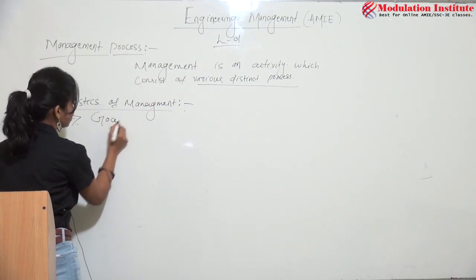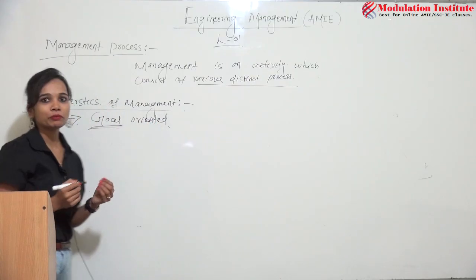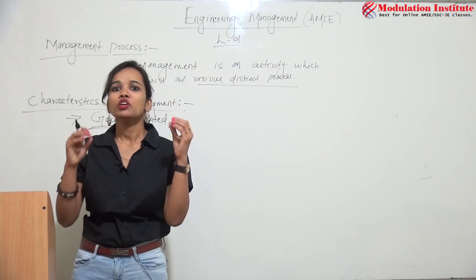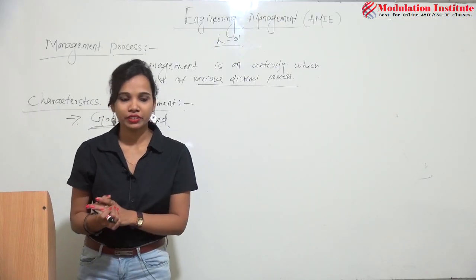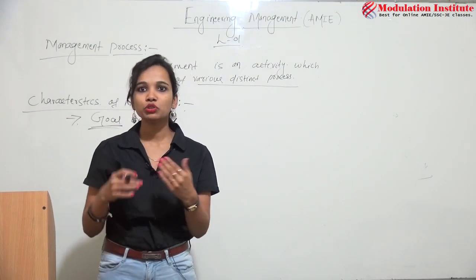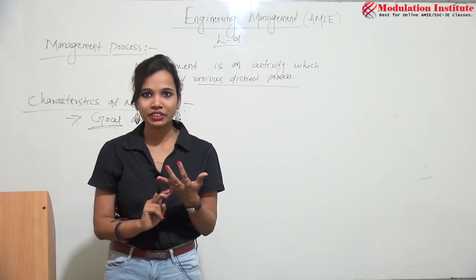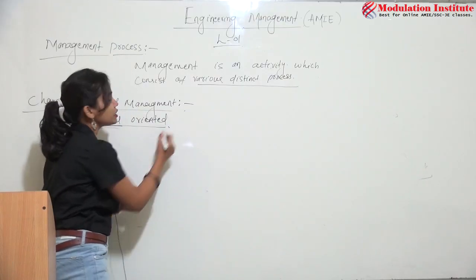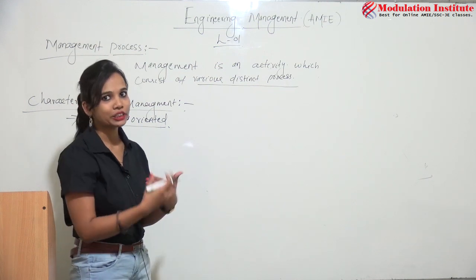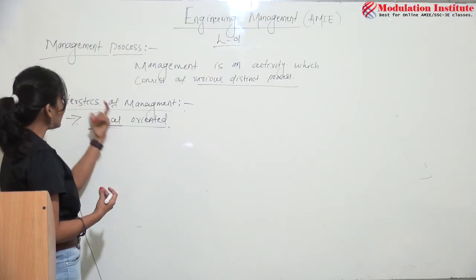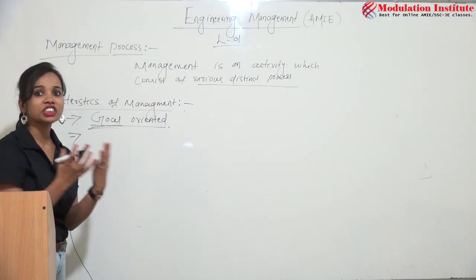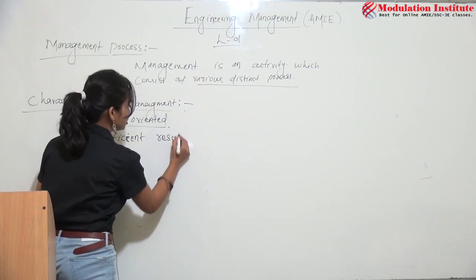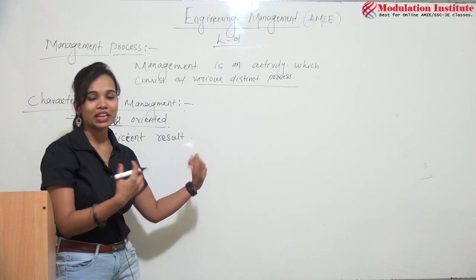First characteristic: management is goal-oriented. Goal-oriented means every company or organization has a proper achievement they are working toward. For example, in a production company, the goal may be to improve quality of production and reach more people in the market. We can achieve this goal by applying management. Second characteristic: it gives an efficient result — achieving results in less cost and less time.